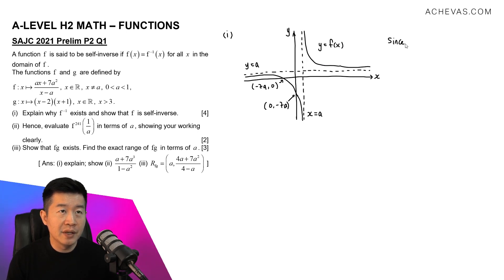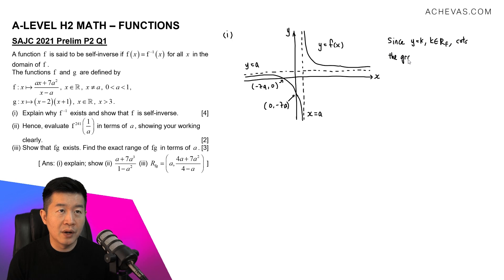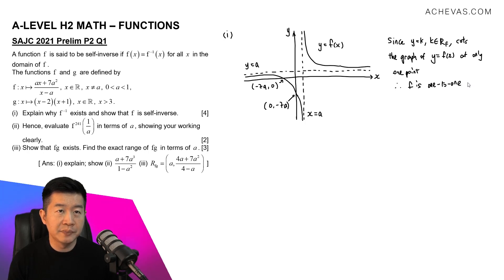By looking at this graph, we can observe that any horizontal line y equals k, where k takes up the complete set of values in the range of f(x), is going to cut the graph at only one point. Therefore, f is a one-to-one function, and this tells us that f inverse exists.